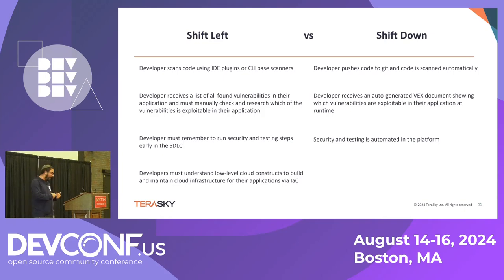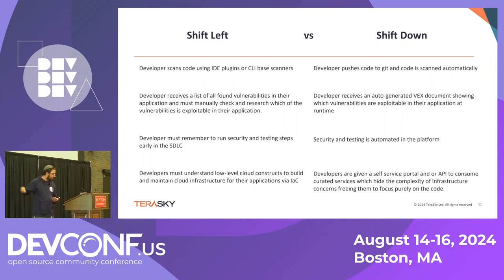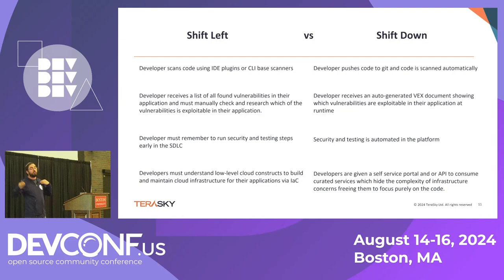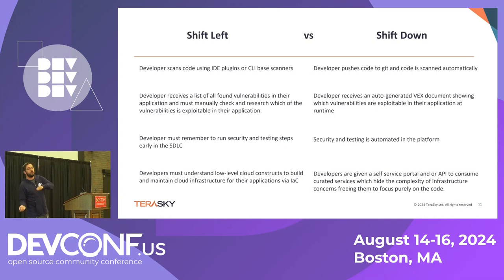The general issue is developers needing to understand low-level cloud constructs. If they want to bring up an EKS cluster, good luck learning all 32,000 resources needed to create a simple EKS cluster in AWS — it's not feasible. In the shift down approach, developers are given a self-service portal or an API through things like compositions and Crossplane, to easily consume high-level services. They don't care if it's RDS, Azure Managed SQL, a Bitnami Helm chart, or an OperatorHub operator — we just expose the few fields they actually care about, like what version of Postgres they're using.